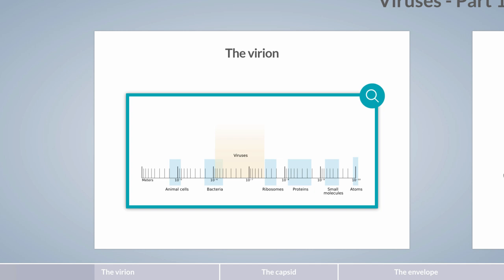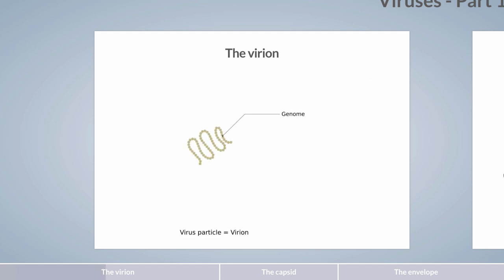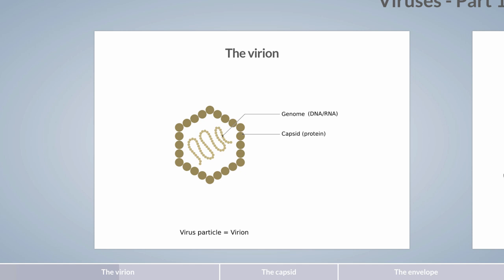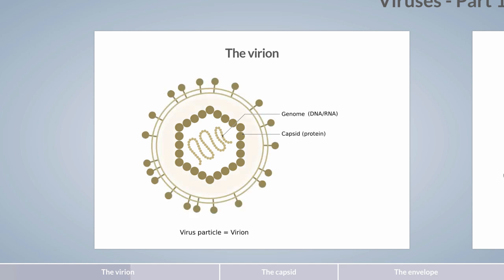Viruses come in many shapes and sizes, such as rods, bullets, or an icosahedron or sphere. A virion consists of a viral genome, which can be either DNA or RNA, and is enclosed in a protein capsid that provides protection. These viruses are referred to as non-enveloped viruses. This is in contrast to viruses surrounded by a biological membrane, known as an envelope, which contains lipids and proteins. As its name suggests, these viruses are also called enveloped viruses.